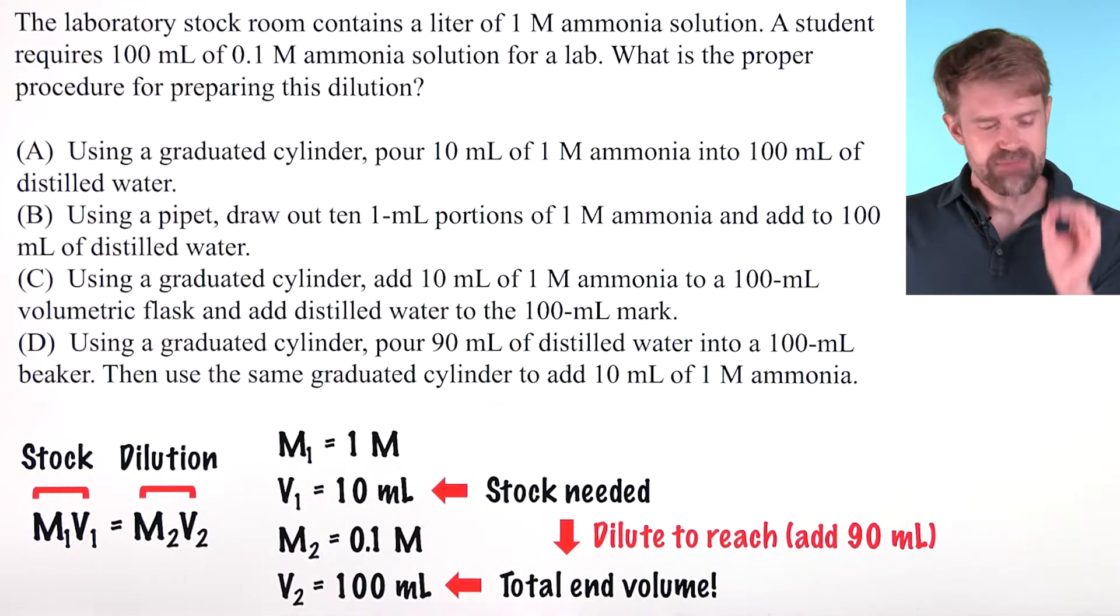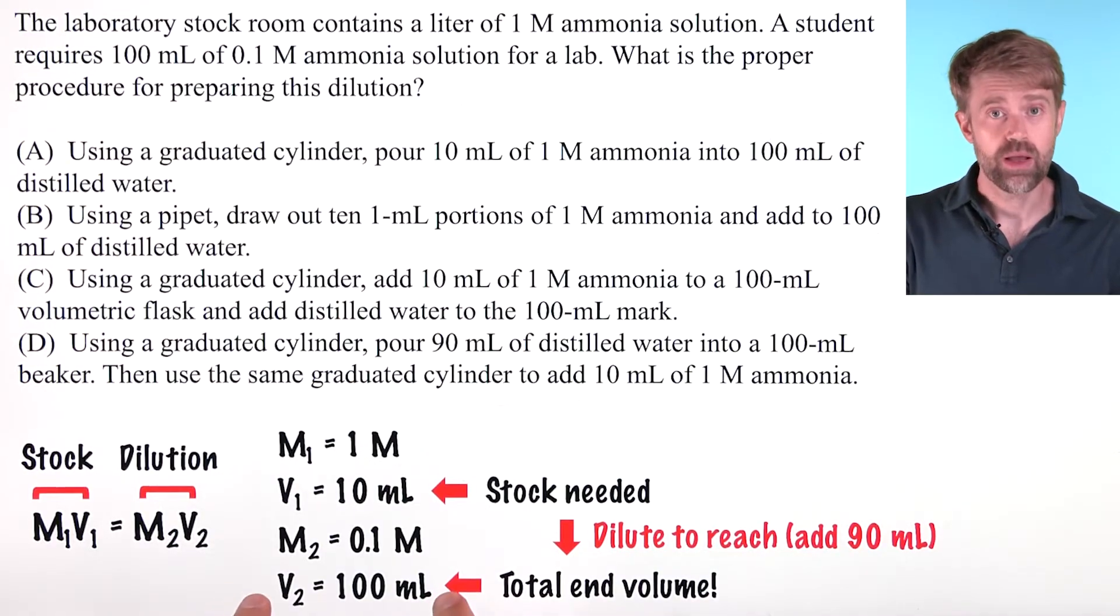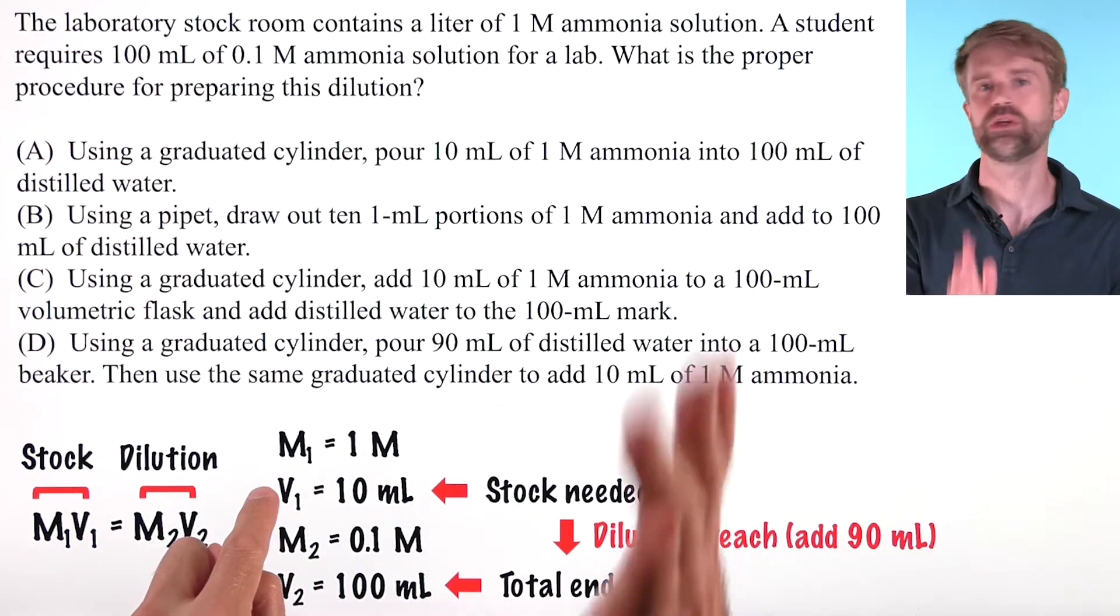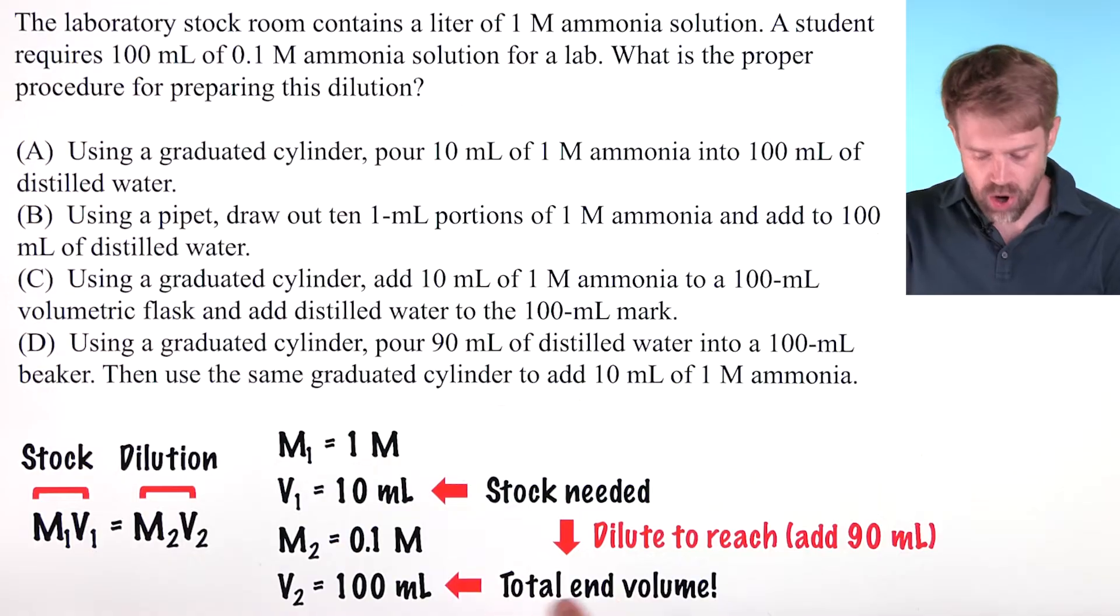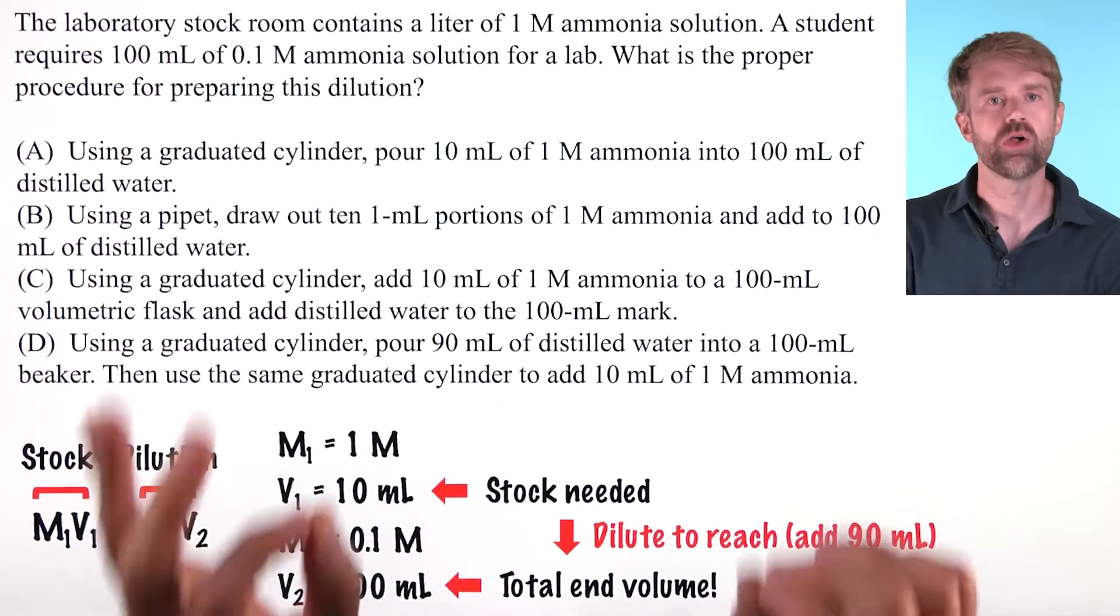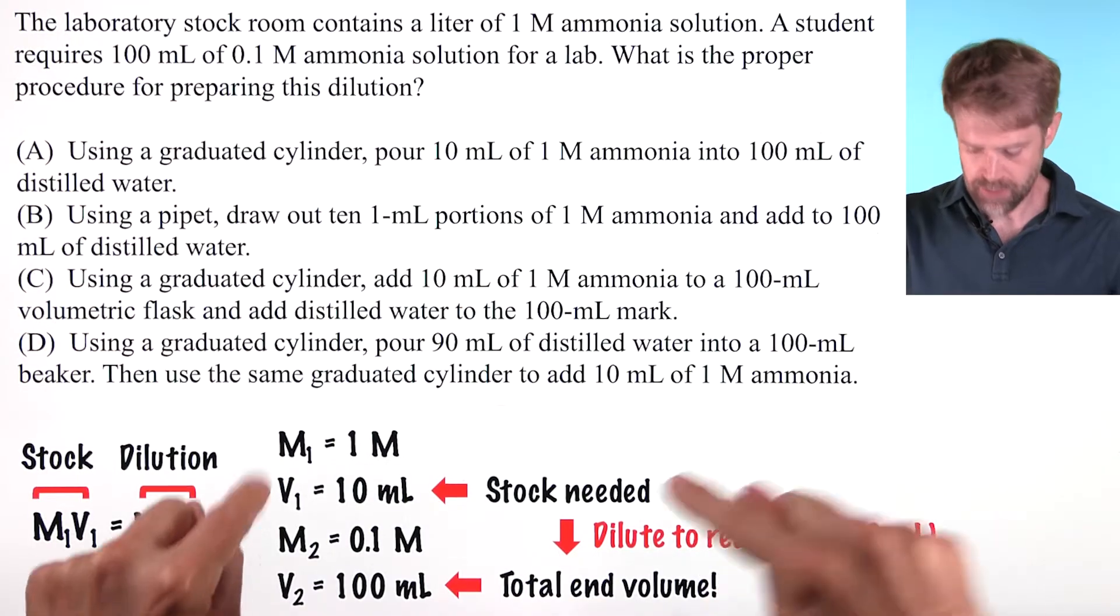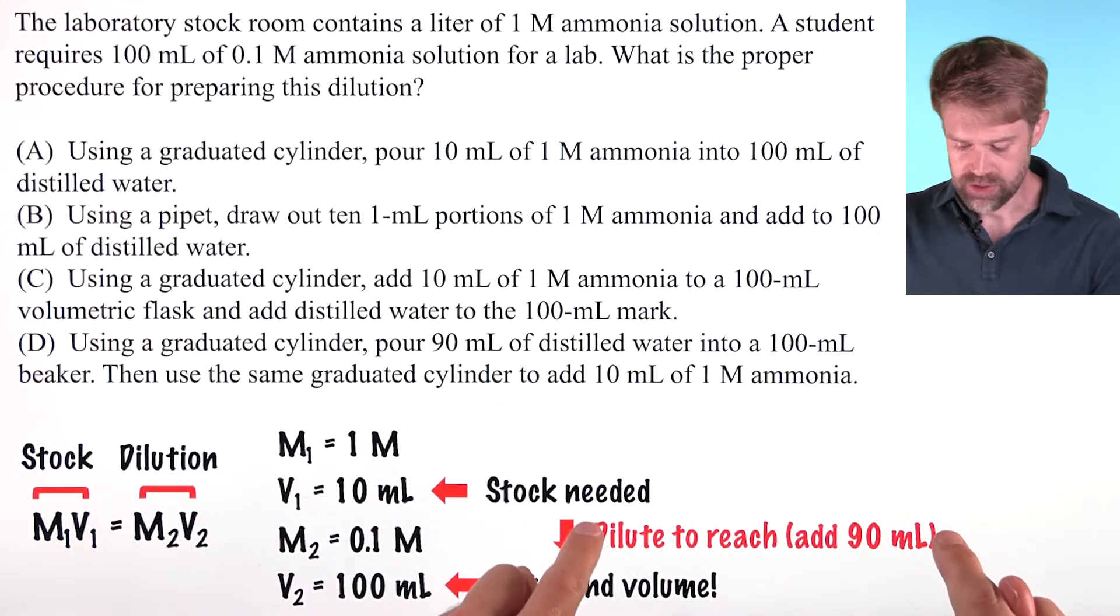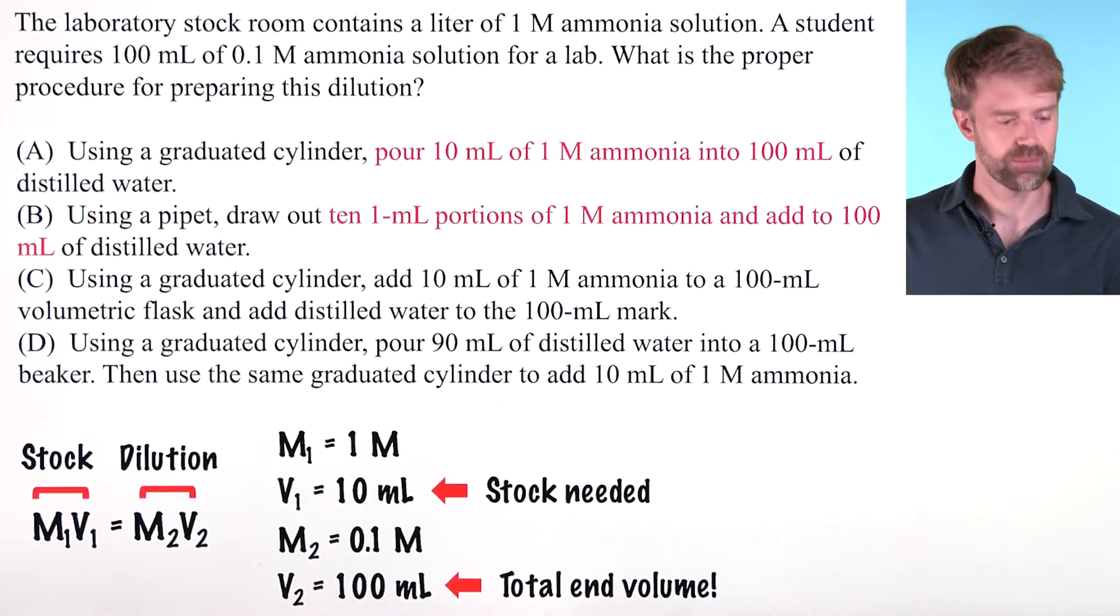But many, many times, students think that V2 is the amount of distilled water that you add to V1. So many students think that. It's wrong. V2 is the total final volume that you have at the end. So it is V1 plus the amount that you add gives you V2. This is super important.